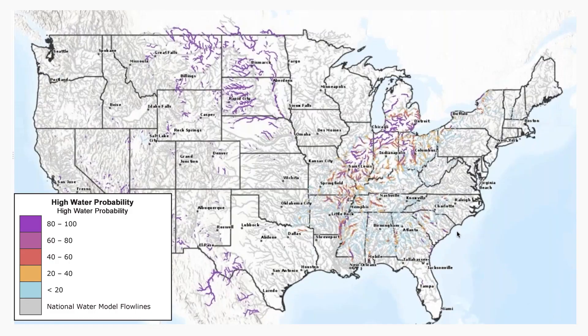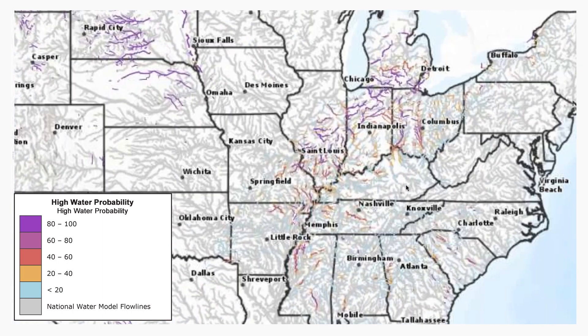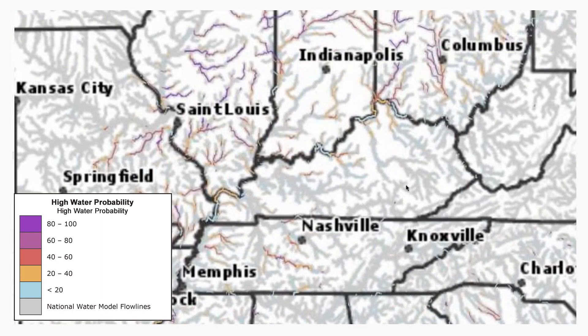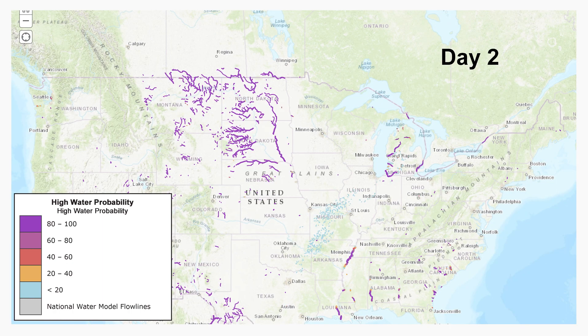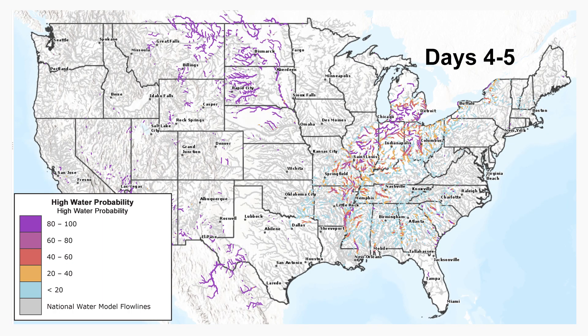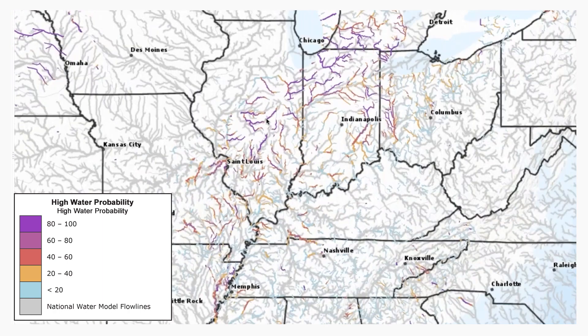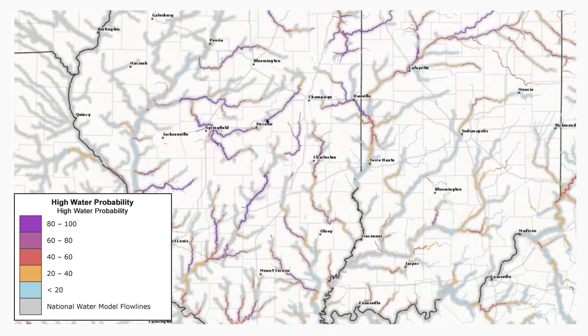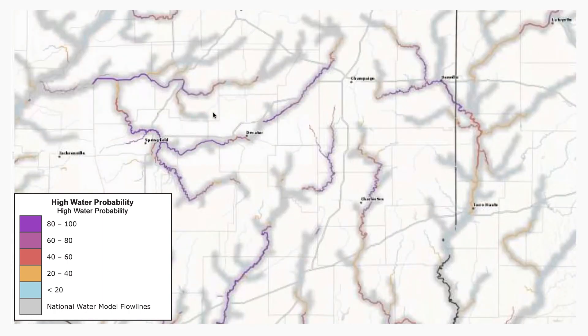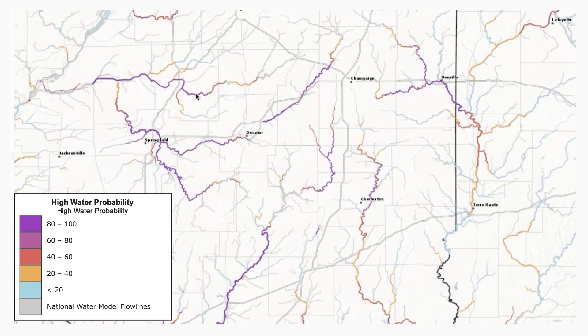The five-day estimated high water probability forecast provides probabilistic forecast visualizations depicting the chance for stream reaches to reach or exceed the estimated high water threshold on day one, day two, day three, days four to five, and days one to five. Stream reaches are shown if high water conditions are expected to be met or exceeded during each of these forecast periods.